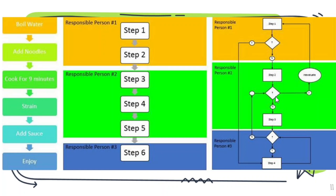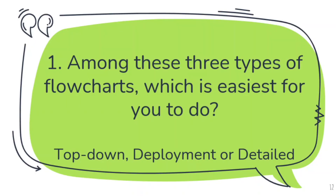I have questions here. Please comment in the comment section with your answers. Question one: among these three types of flowcharts, which is easiest for you to do? There's no right or wrong answer. Is it number one — top-down? Number two — deployment chart? Or number three — detailed flowcharts? Just type it down in the comment section.